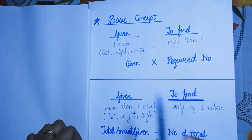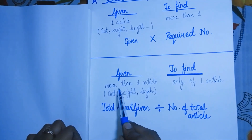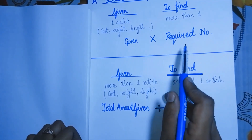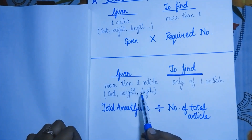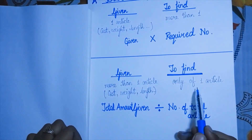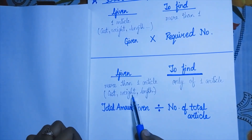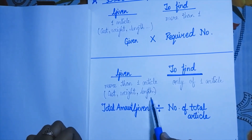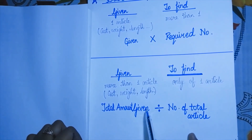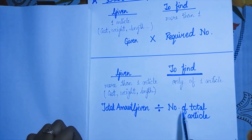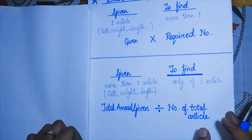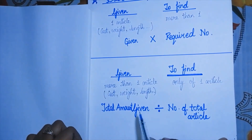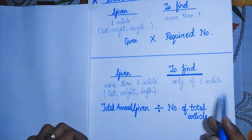When we have more than one article — given the total cost, weight, or length — and need to find the value of one, we divide the total amount by the total number of articles. For example, if there are 5, 7, or 3 articles, dividing the total amount gives us the price of one article. This is our basic concept, and now we will attempt the questions.